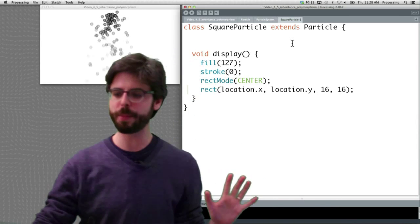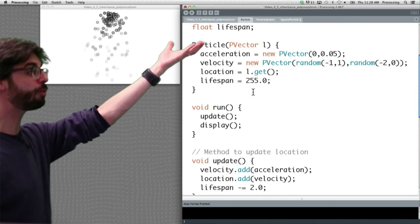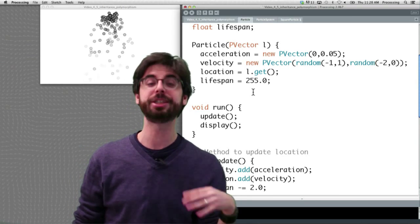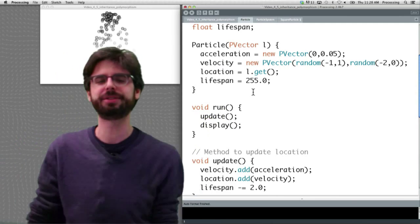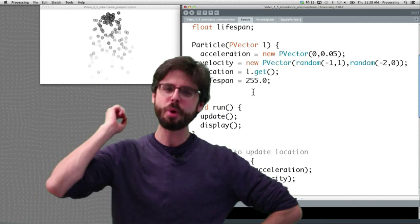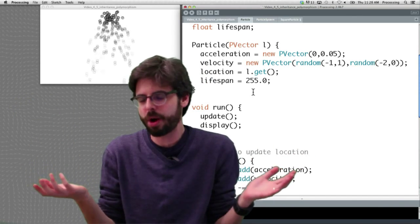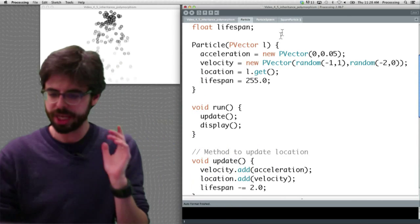Well, let's for a moment go back and look at how the constructor is written for the regular particle. The constructor receives a p-vector, that's the particle's location where it is born, and it makes an acceleration, it makes a velocity, and it has a lifespan. So it does all this stuff. I have something to say. I want our square particle to basically be the same. There's no reason to make the square particle any differently. I just want to display it in a different way. So our square particle is going to be the same.